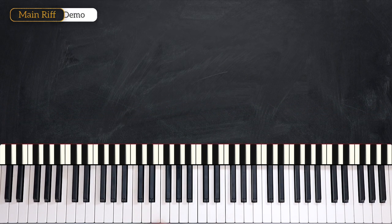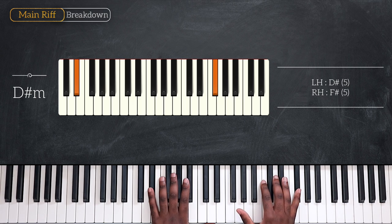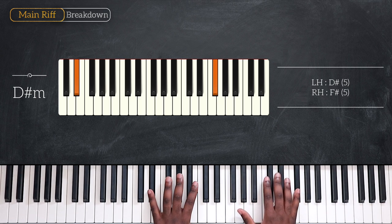And we're starting with D sharp minor, playing two notes. D sharp on my left, F sharp, and then a third on my right, up here.